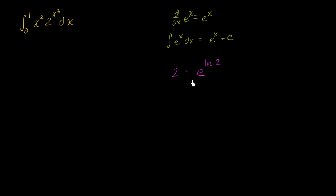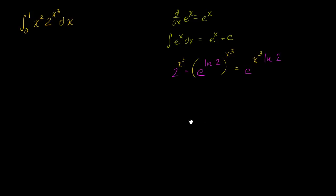So this is what two is. Now, what is two to the x to the third? If we raise both sides to the x to the third power, two to the x to the third equals — raising something to an exponent and then raising that to an exponent — e to the x to the third times the natural log of two. That already seems pretty interesting, so let's focus on the indefinite integral first, figure that out, and then evaluate the definite one.